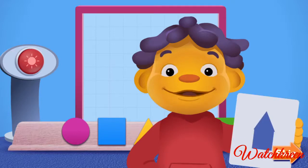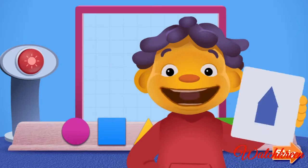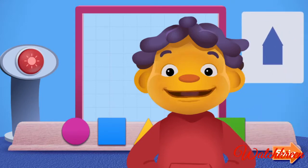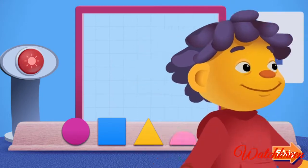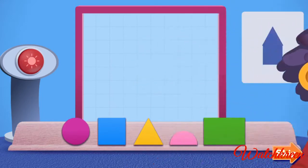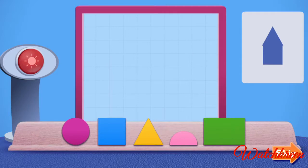Check out my shadow card. I'm trying to pick shapes that will make the same kind of shadow. Let me show you how to play. First, I look at the card and decide what shapes I need.